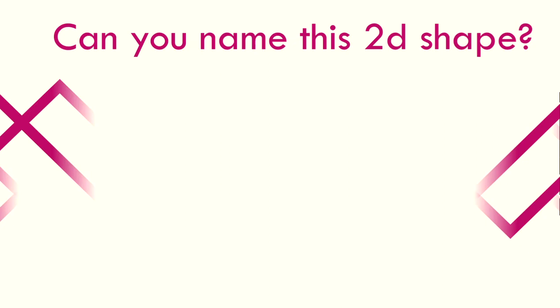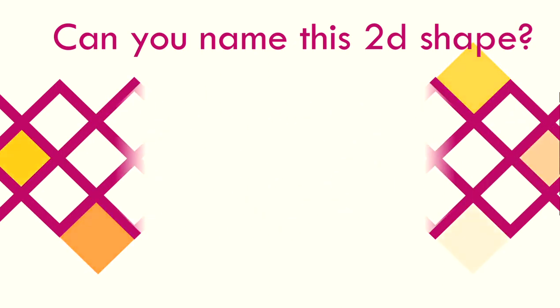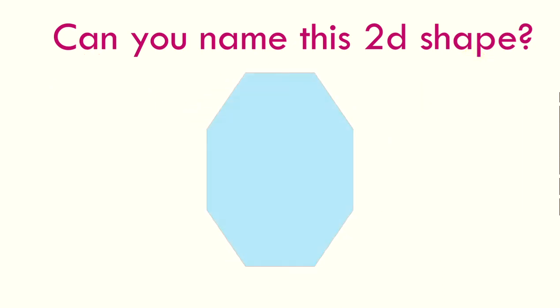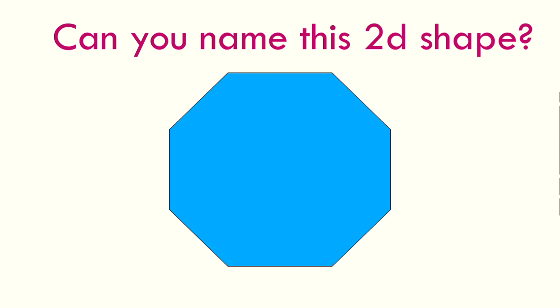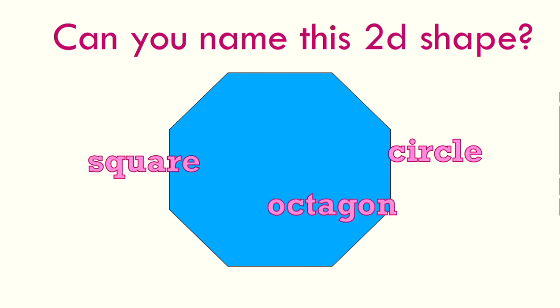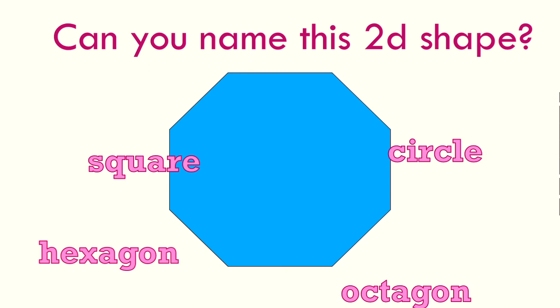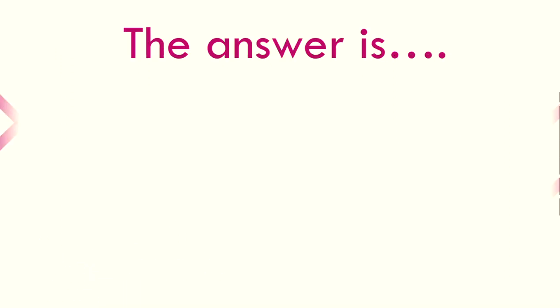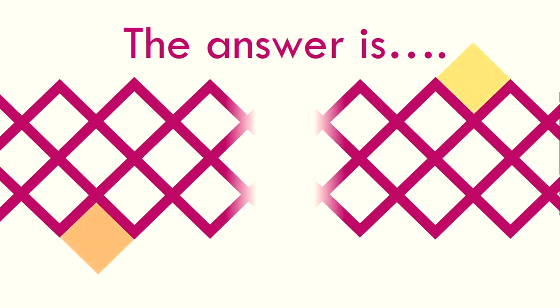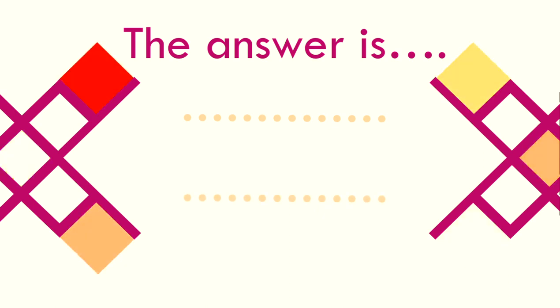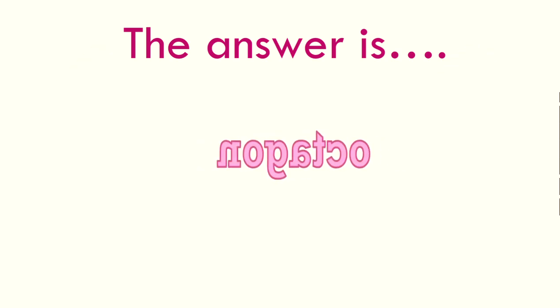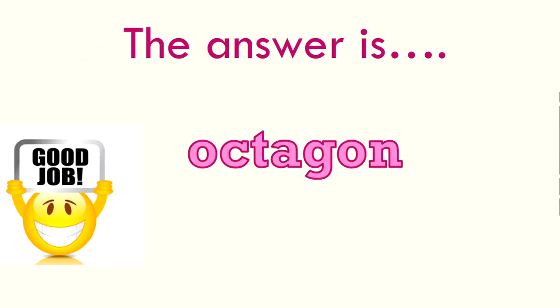What about this 2D shape? It's an eight-sided shape. Is it a circle? A square? An octagon? Or a hexagon? The answer is octagon. Well done if you remembered that.